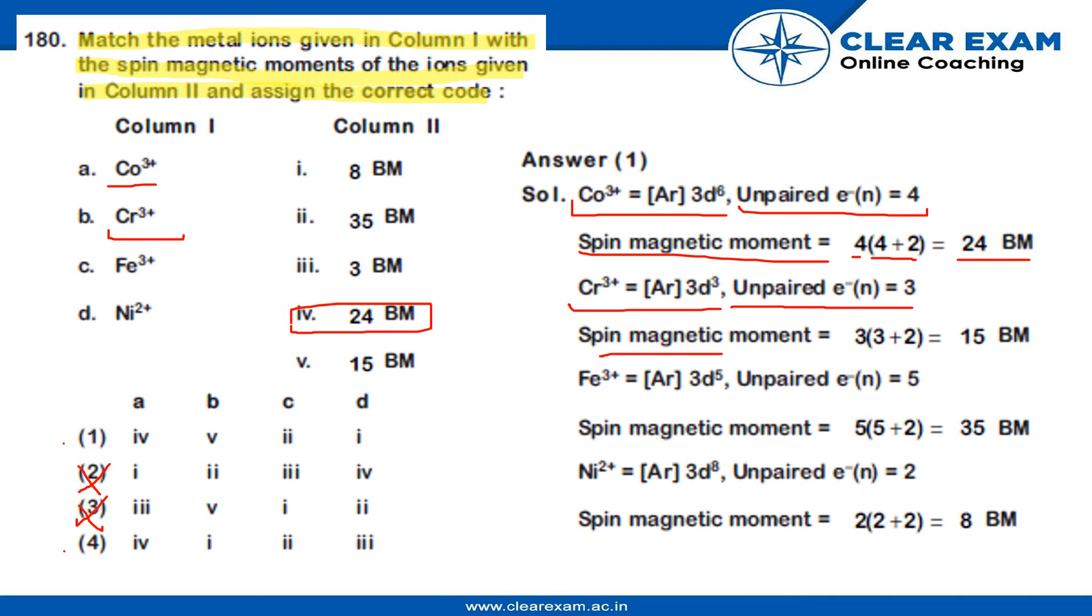Now, spin magnetic moment is given by the formula n into n plus 2. So, here we have n as 3, so 3 into 3 plus 2 giving us 15 BM. So, we look for 15 BM, that is the 5th option.